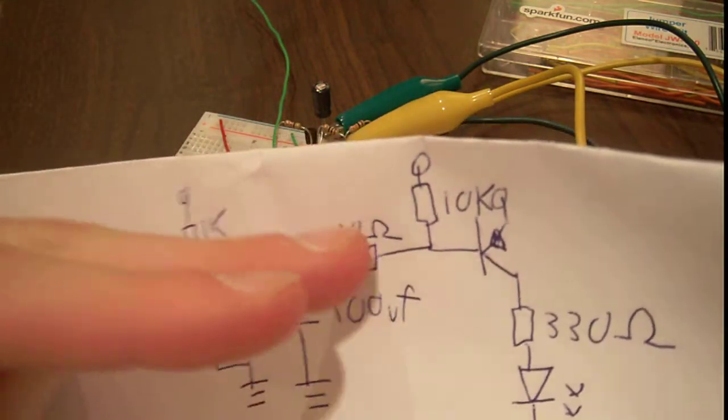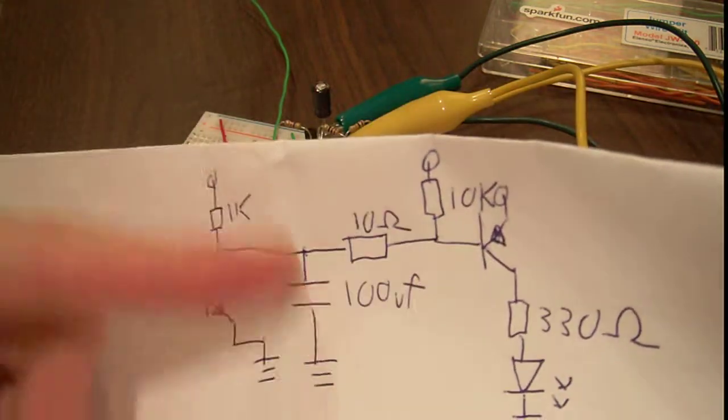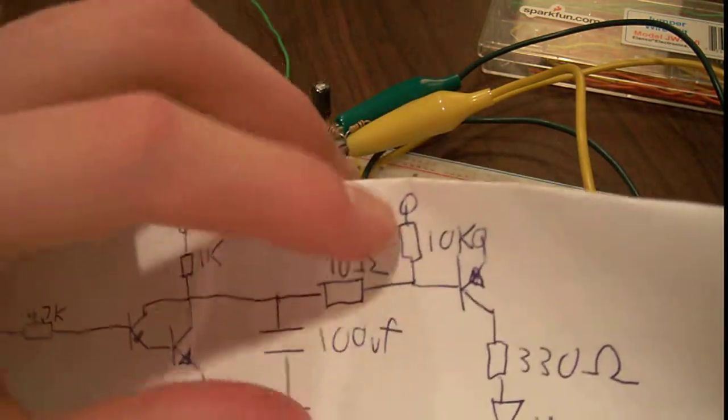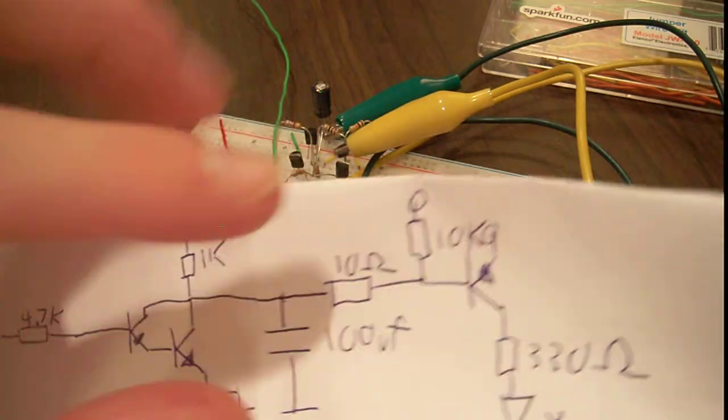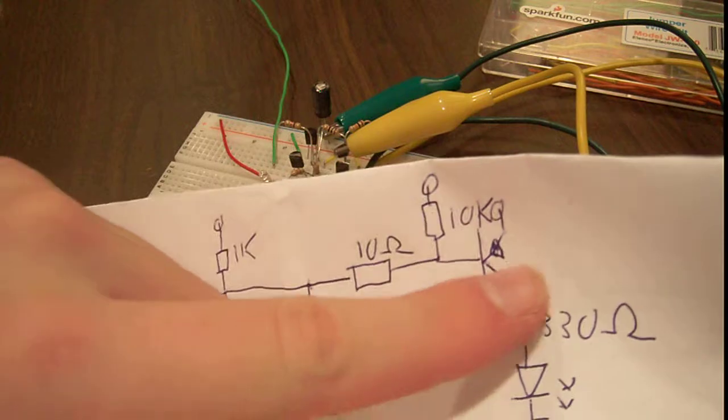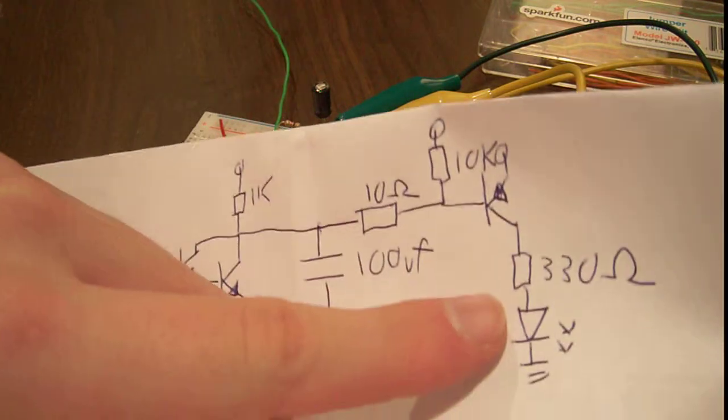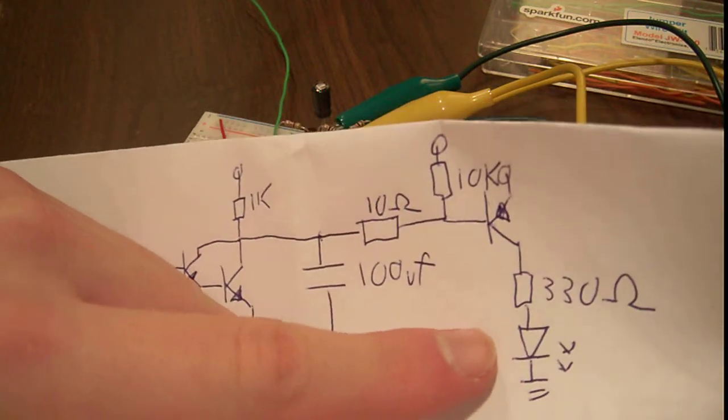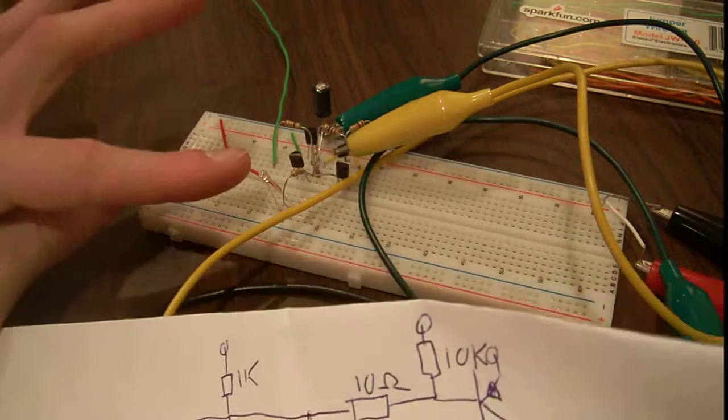10K resistor, a 10 ohm resistor to pass through. It creates a little RC circuit. And a 10K pull-up resistor through a PNP, and that goes high. And then the output goes through a 330 ohm resistor into an LED. And that's this LED here.